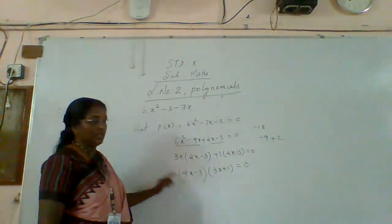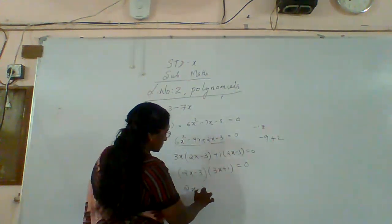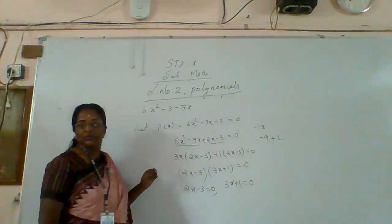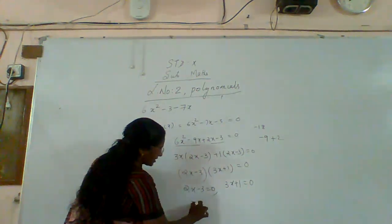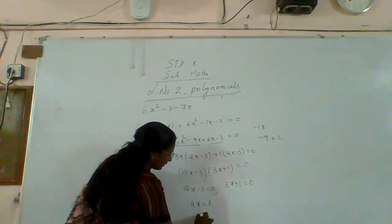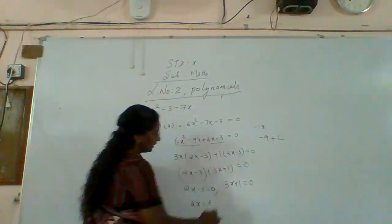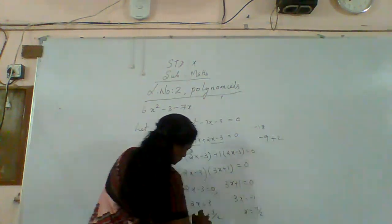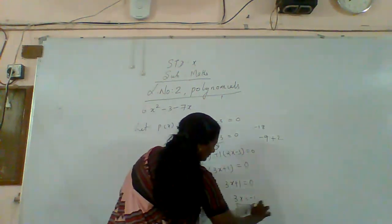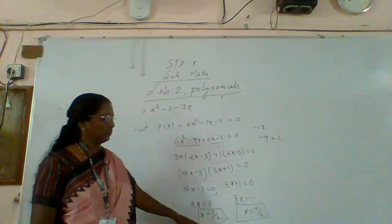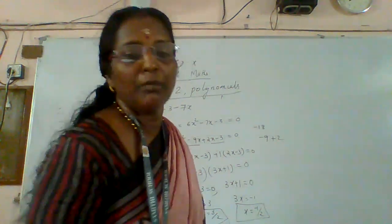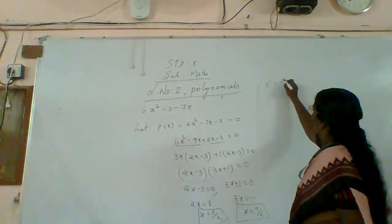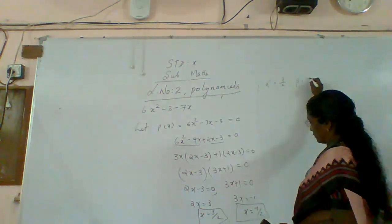So two x minus three is equal to zero, therefore two x equals three, so x is equal to three by two. And three x plus one equal to zero, so three x equals minus one, therefore x is equal to minus one by three. Therefore the zeros are x equals three by two and x equals minus one by three.